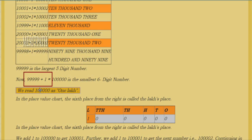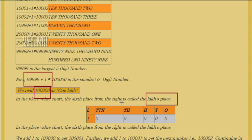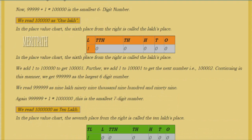99,999 is the largest five-digit number. When we add one to 99,999, we get one lakh — written as 1 followed by five zeros. We call this number one lakh. In the place value system: ones place zero, tens place zero, hundreds place zero, thousands place zero, ten thousands place zero, and in the lakhs place we have one. So one followed by five zeros is one lakh.